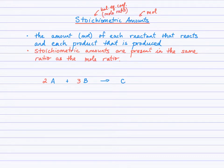And so stoichiometric amounts means that we have moles that are present in the amounts equivalent to the mole ratio. So we have reactant amounts, moles of reactants that are reacting and moles of products that are being produced, and those moles are present in the same ratio as the mole ratio.